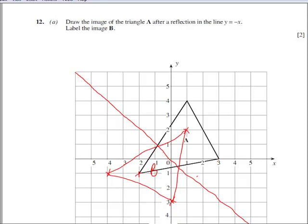Alternatively you can get your tracing paper, draw the line y equals minus x, draw the triangle A and simply flip it round across the reflection line.